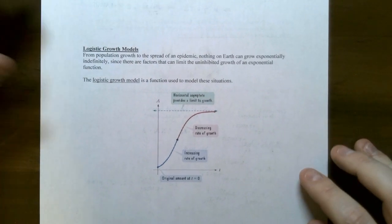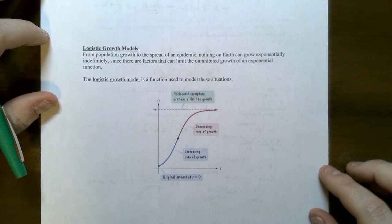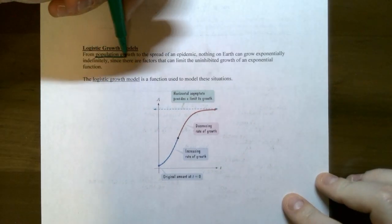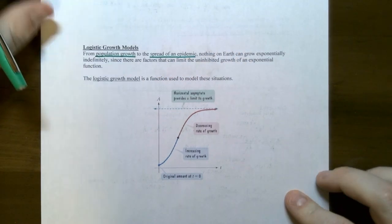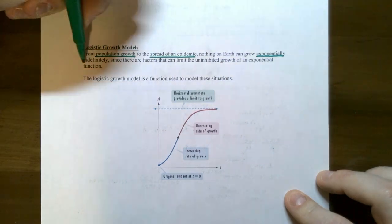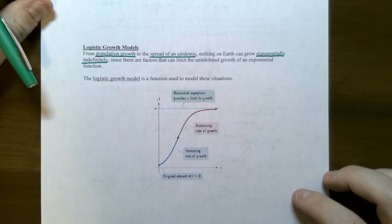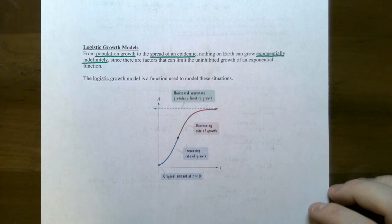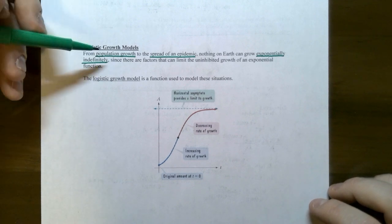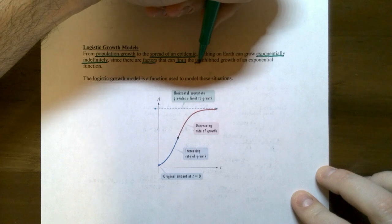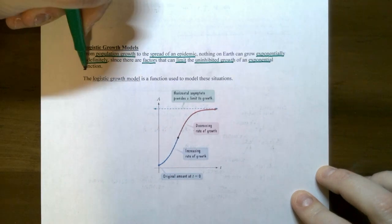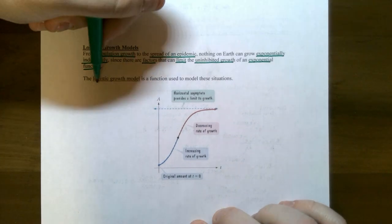The last topic in this video is logistic growth models. From population growth to the spread of an epidemic, nothing on earth will ever grow exponentially indefinitely without bound. Exponential growth functions are called uninhibited growth, but factors will eventually limit that growth — and these are called logistic growth models.